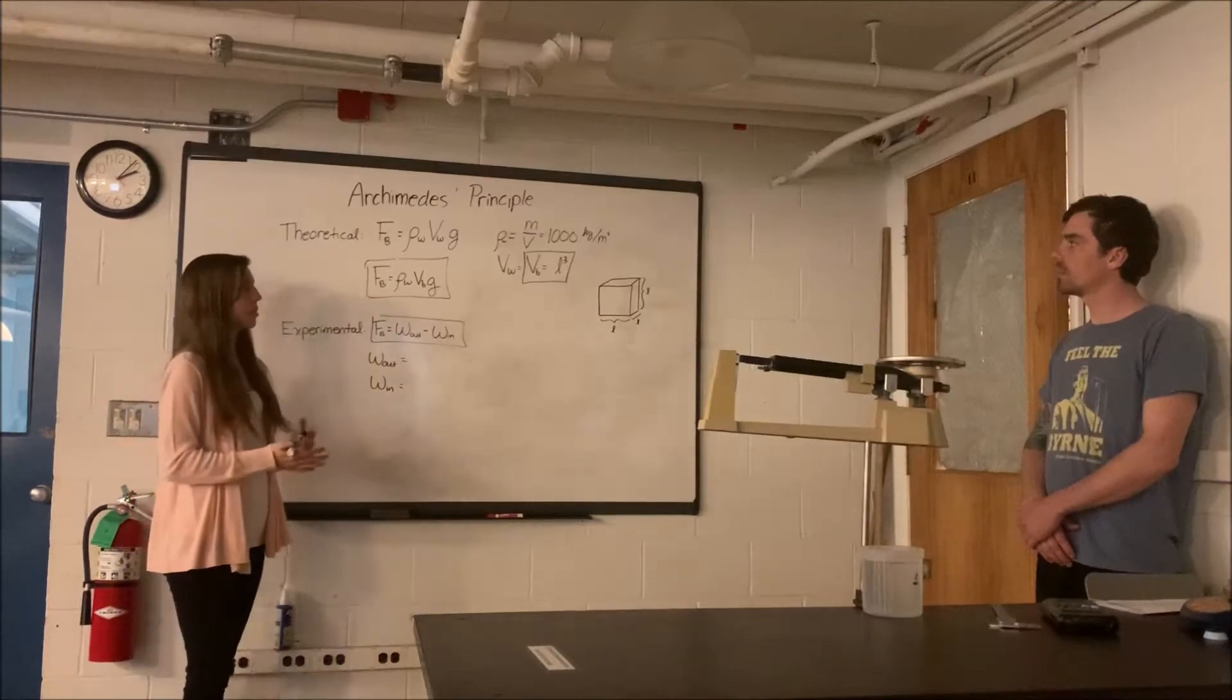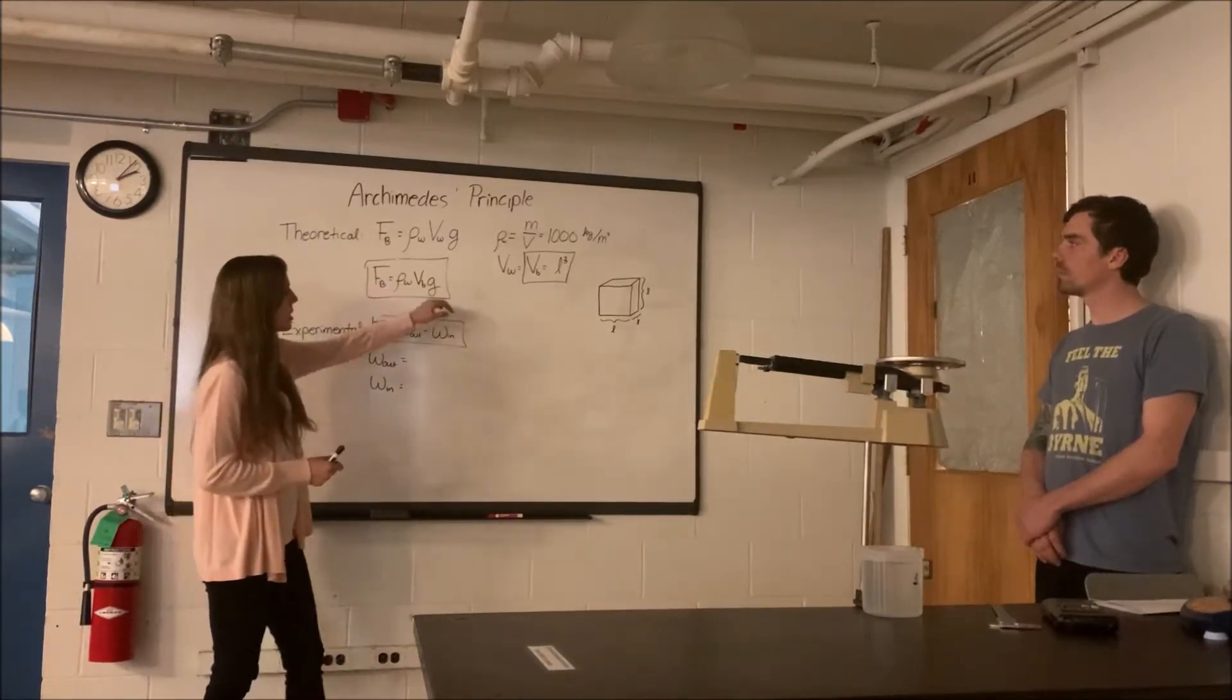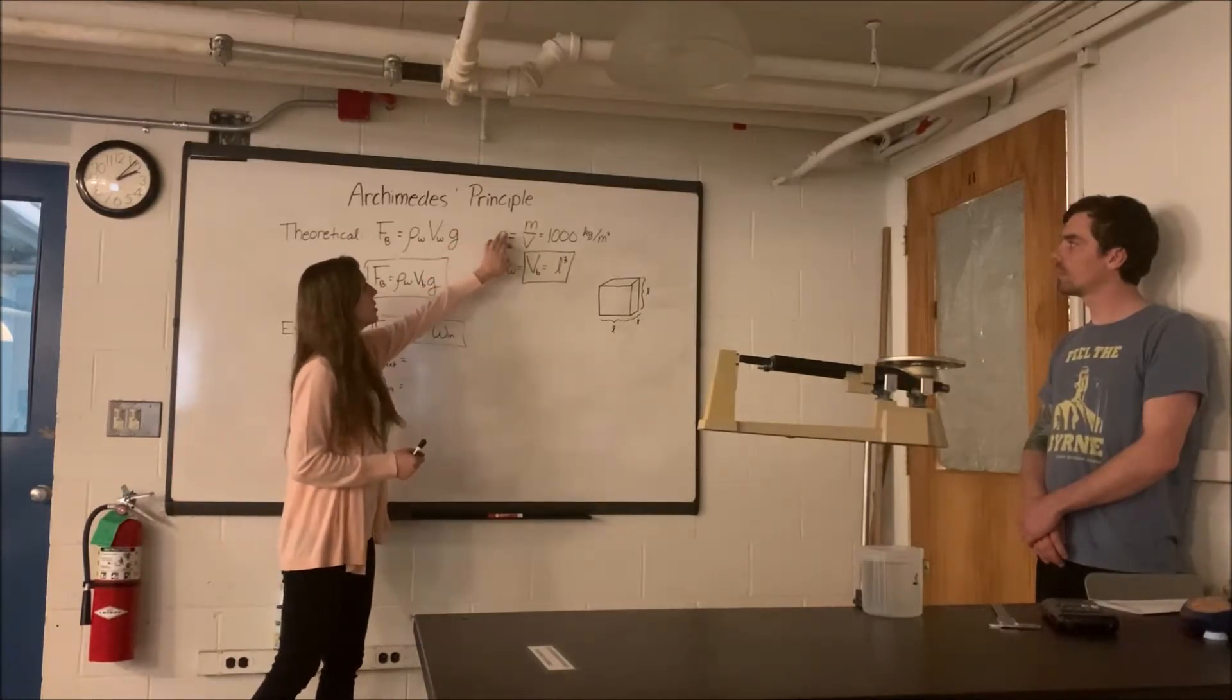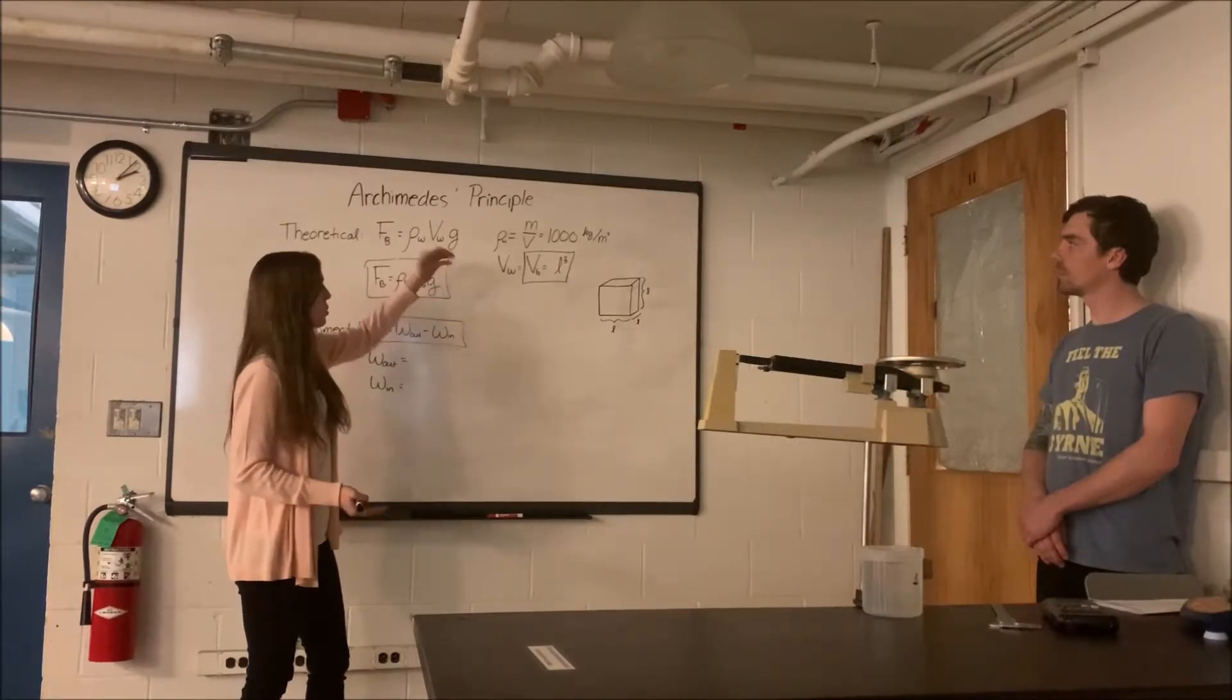As we all know, weight equals mg, mass times gravity. So to get the mass of the water displaced, we're going to multiply the density of water, which I've given to you, by the volume of the water displaced, which we're going to find.